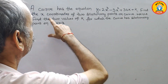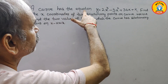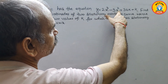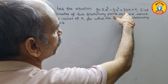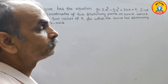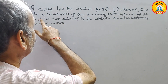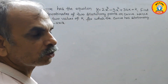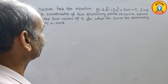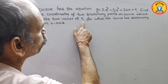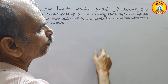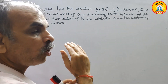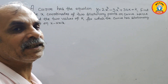Your question is: a curve has the equation y = 2x³ - 3x² + 36x + k. Find the x coordinates of the two stationary points on the curve. Hence, find the two values of k for which the curve has stationary points on the x-axis.